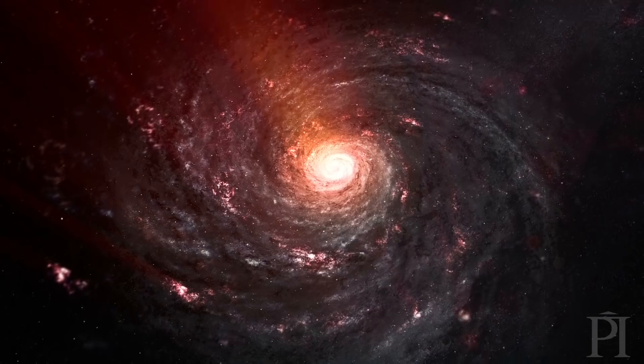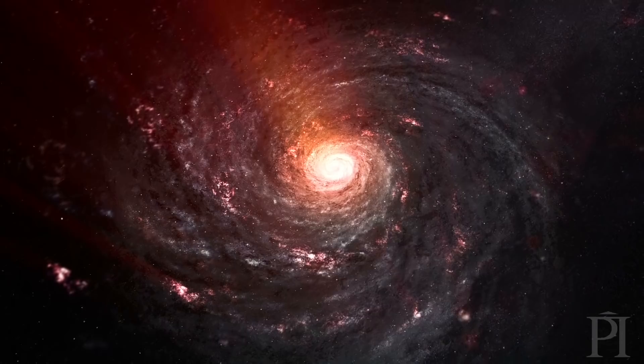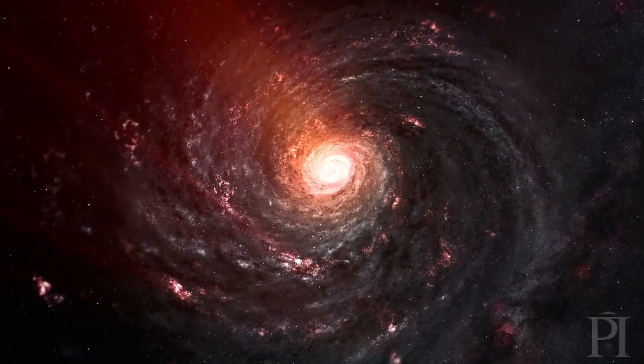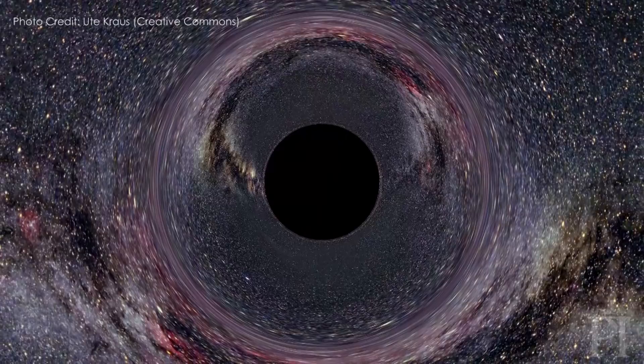Despite their enormous masses, black holes, even the ones at the centers of galaxies that are a billion times as massive as the Sun, are very tiny objects. We don't see the black hole directly. We see the stuff that is surrounding it.